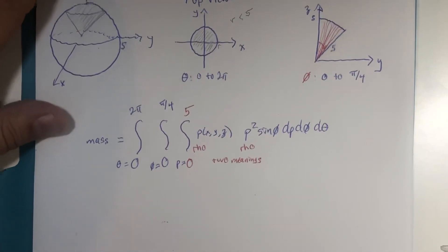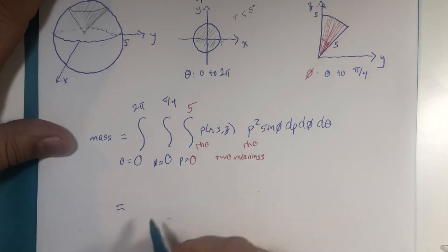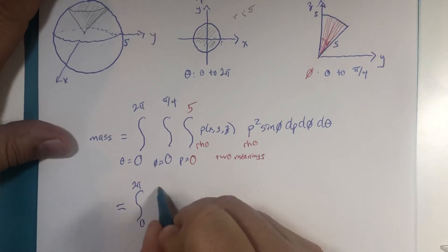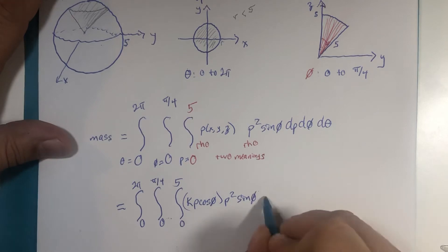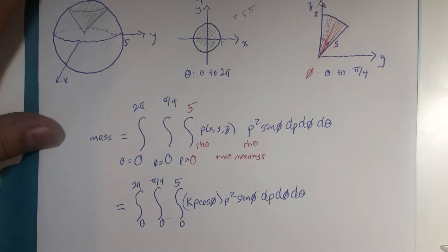So finishing touches. Mass is 0 to 2π, 0 to π divided by 4, 0 to 5. Constant times ρ cos(φ), ρ² sin(φ) dρ dφ dθ.